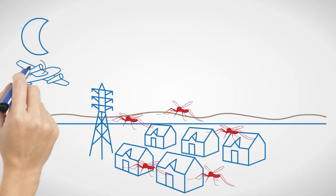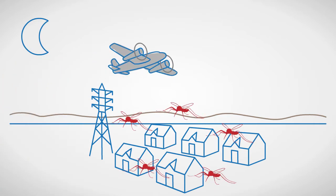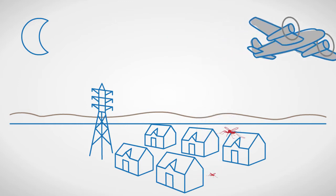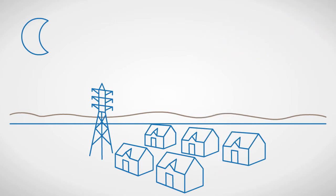Aerial adulticide treatments use a larger aircraft that flies about 300 feet above the ground at night when adult mosquitoes are most active.